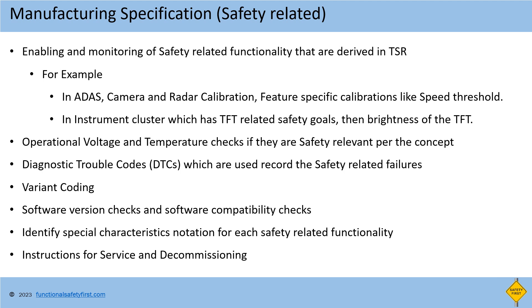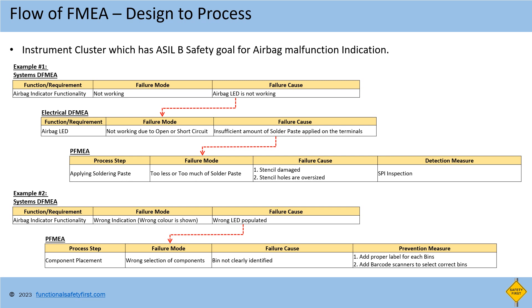For example, improper dismantling of an airbag module might result in a hazard. Finally, ensure the functional safety related items are flagged as safety related and traceable to the DSR flow of design FMEA to process FMEA for the safety related items.